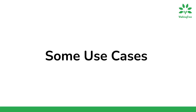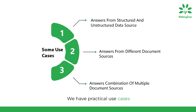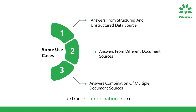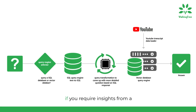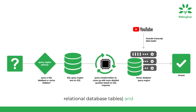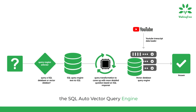We have practical use cases where RAG and LlamaIndex shine. These scenarios include gathering insights from structured and unstructured data sources, extracting information from various document sources, and combining data sources to answer complex queries. In the first use case, if you require insights from a combination of structured data, such as relational database tables, and unstructured data, such as a vector store, the SQL auto-vector query engine comes to your aid, integrating structured insights with unstructured data and offering a comprehensive solution.